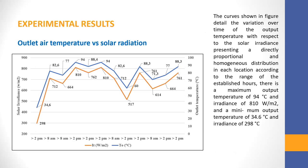There is a maximum output temperature of 94°C and irradiance of 810 W/m², and a minimum output temperature of 54.6°C and irradiance of 298 W/m².